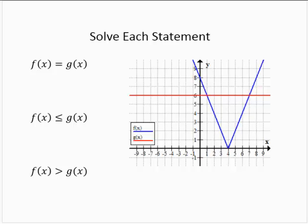To solve the first statement, where is f of x equal to g of x, we need to locate the points of intersection. We find a point of intersection at 1, 6, and a point of intersection at 7, 6.